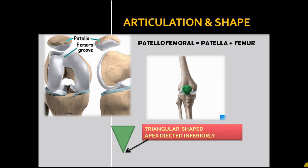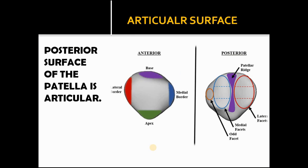The posterior surface of the patella is articular. It is divided into medial and lateral facets by a vertical ridge. There is also a vertical ridge present which separates the medial facet from the medial edge. It is also known as the odd facet of the patella.